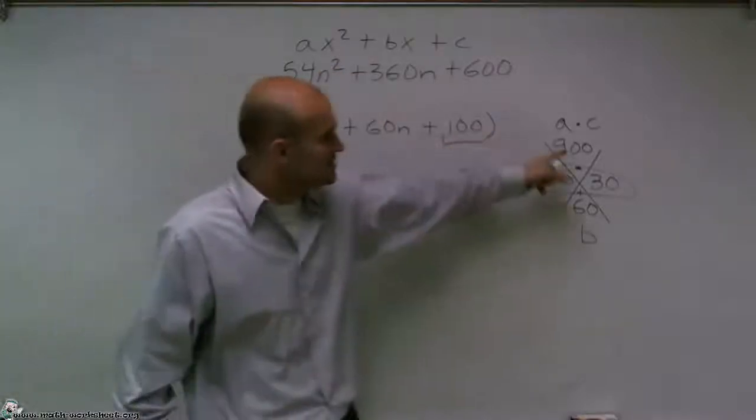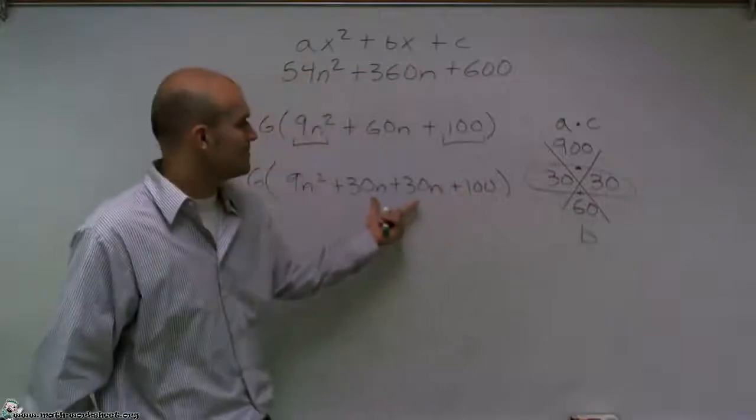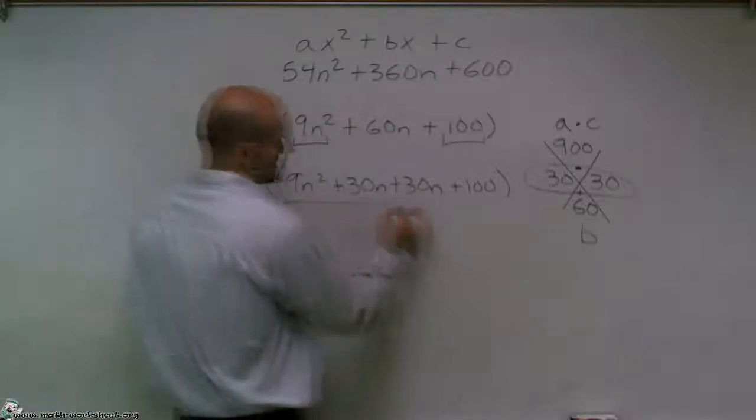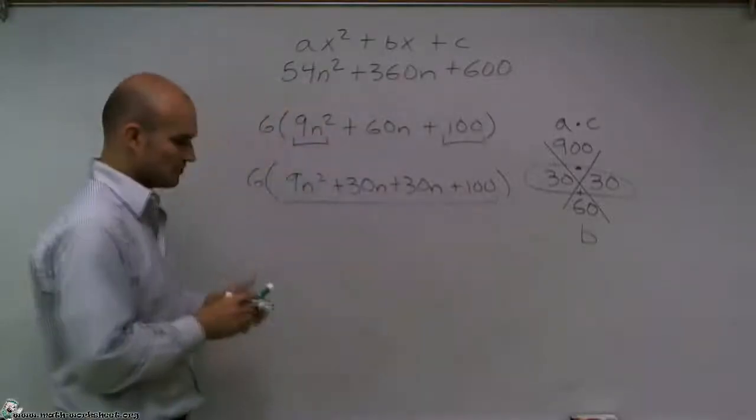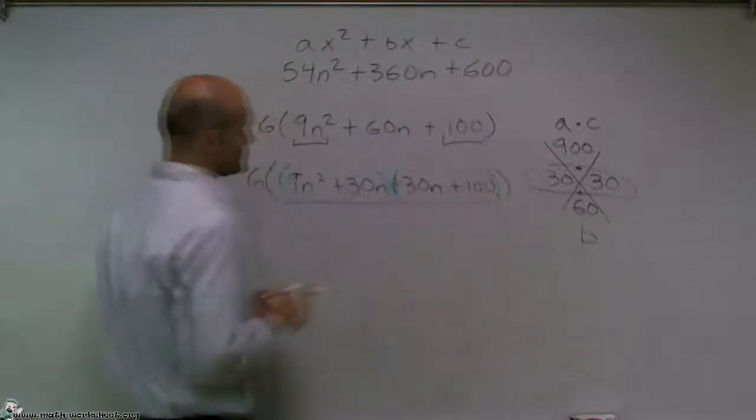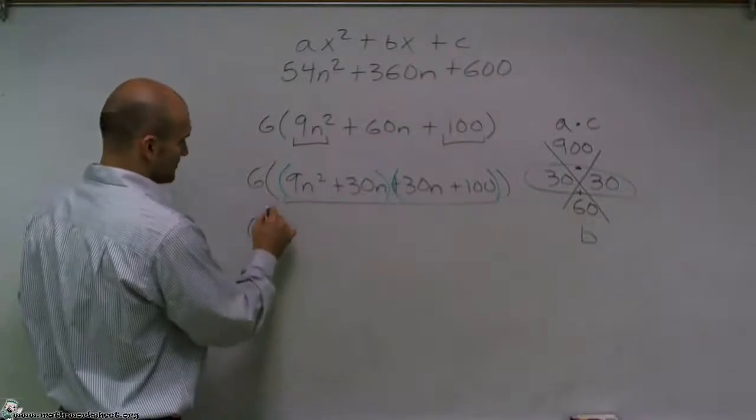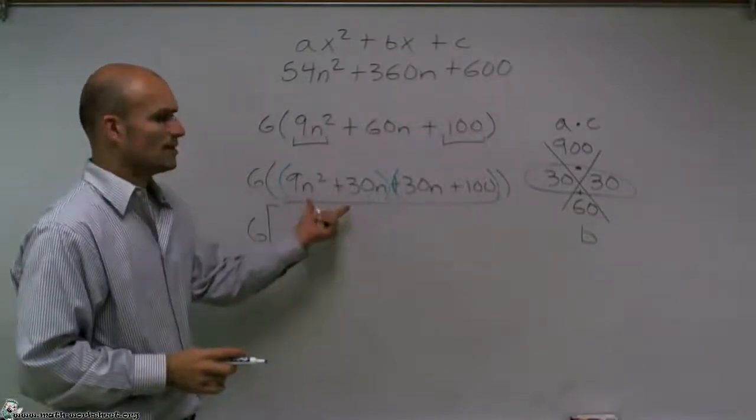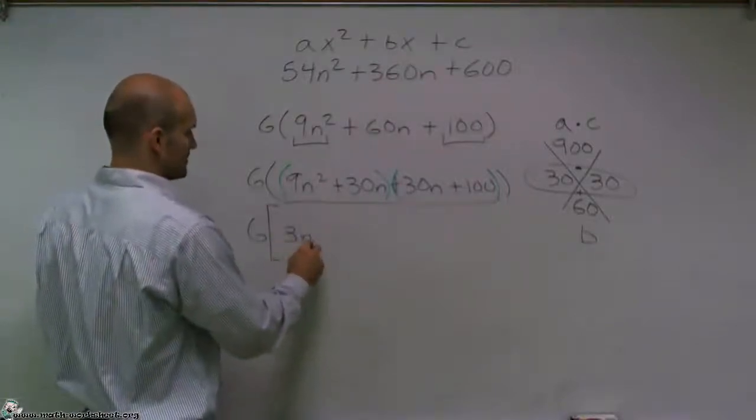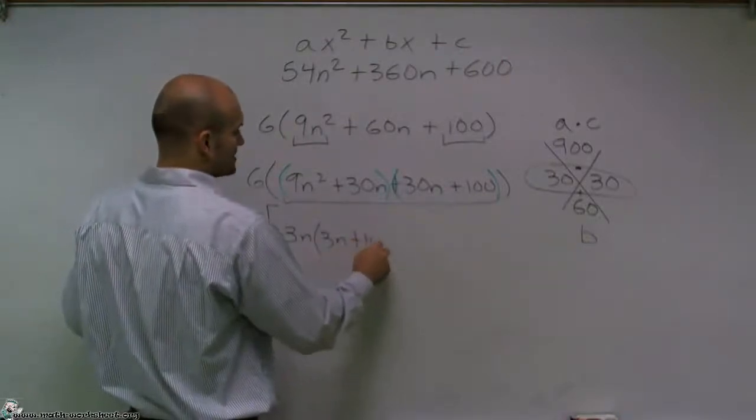Okay, so all I really did was by using this diamond method, I was able to determine what I could rewrite my two middle terms as. Now what I'm going to do is I'm going to factor all of this inside here, I'm going to factor by grouping. So I'm going to group the first two terms and then group the last two terms. Now I'm going to factor out what I can for my first two terms. So here I can factor out a 3n. When I factor out a 3n, I'm just left with another 3n plus 10.